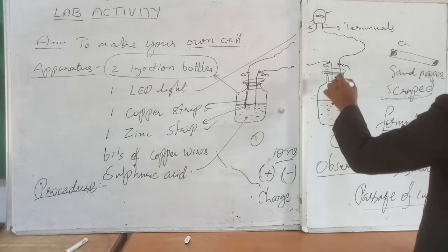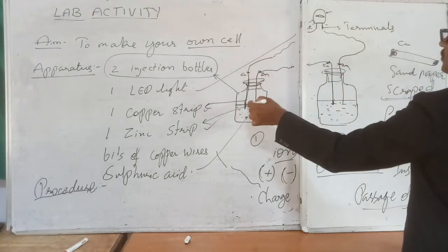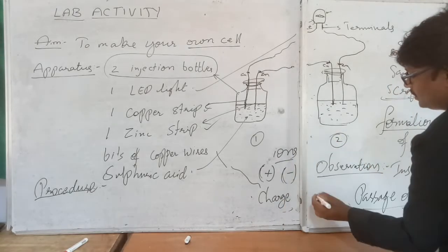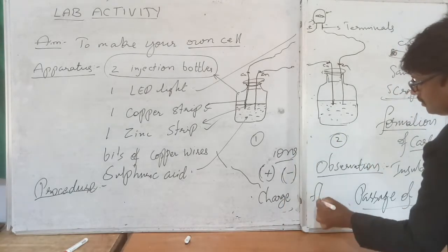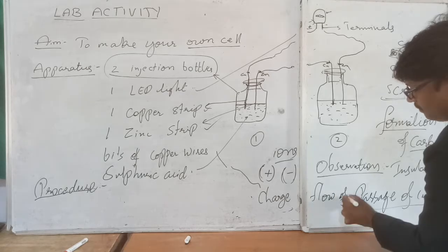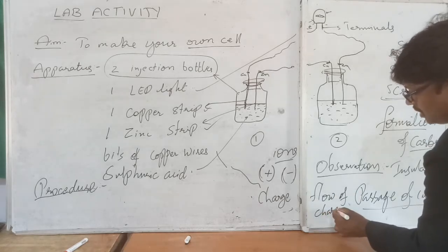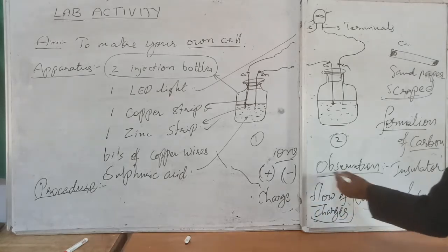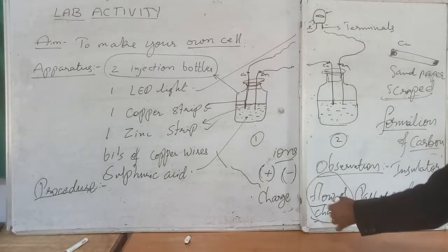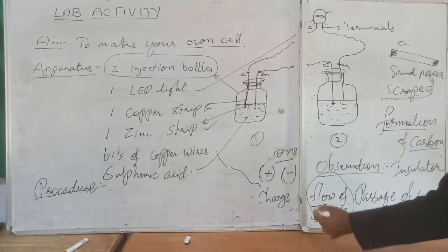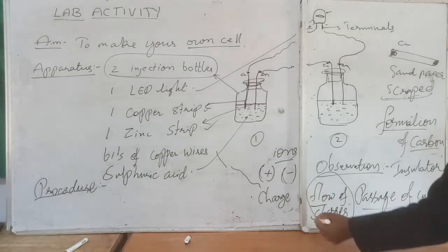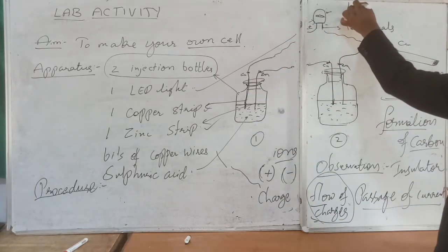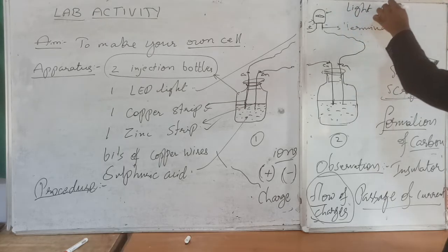The charges flow back into the sulfuric acid and through the copper again, creating a continuous flow of charges. Remember this — flow of charges. When there is a flow of charges through the strips and copper wires, it makes the LED bulb glow.